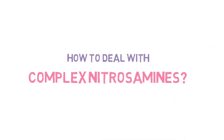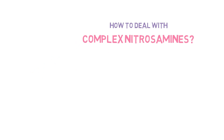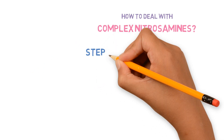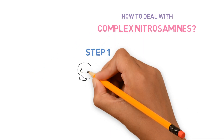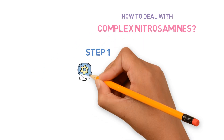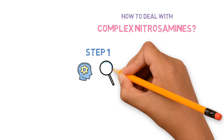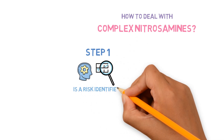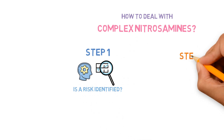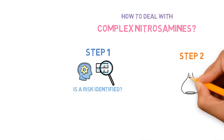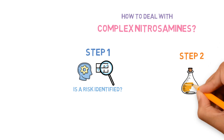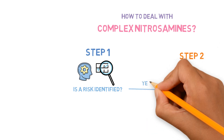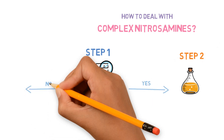How to deal with complex nitrosamines. The nitrosamines risk assessment starts in step 1, which is the theoretical evaluation of risk, and is then followed by step 2, which is the confirmatory testing in case a risk is identified in step 1.